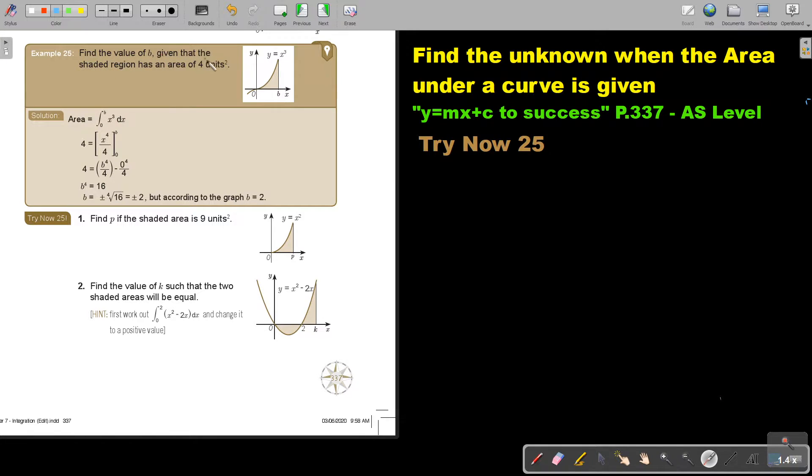Find the value of B, given that the shaded region has an area of 4 units squared. So that is the formula. It's between B and 0. There is the function and I integrate to DX. But now I give you the area, so just substitute that area in there.